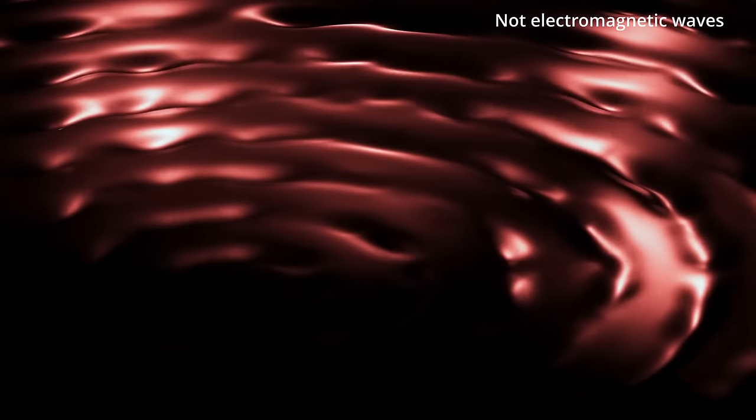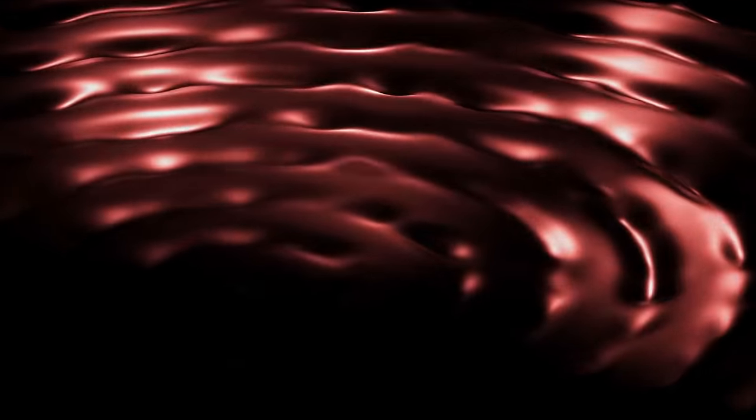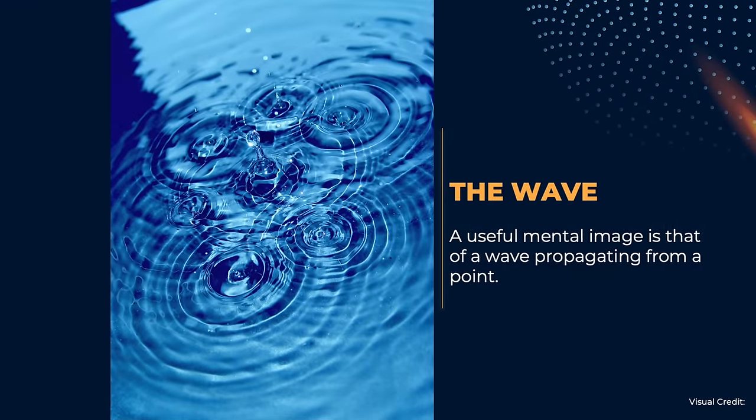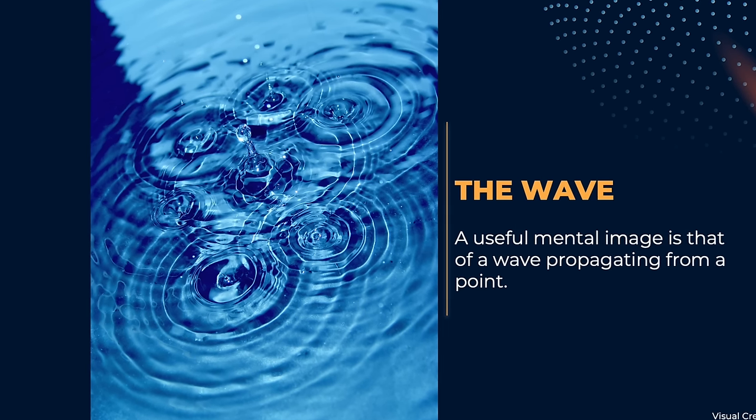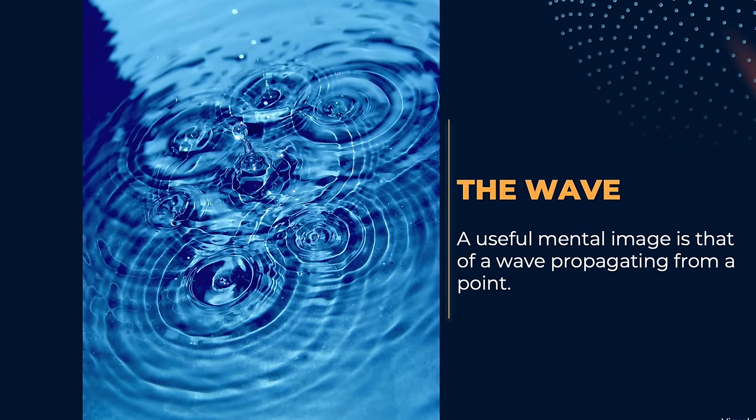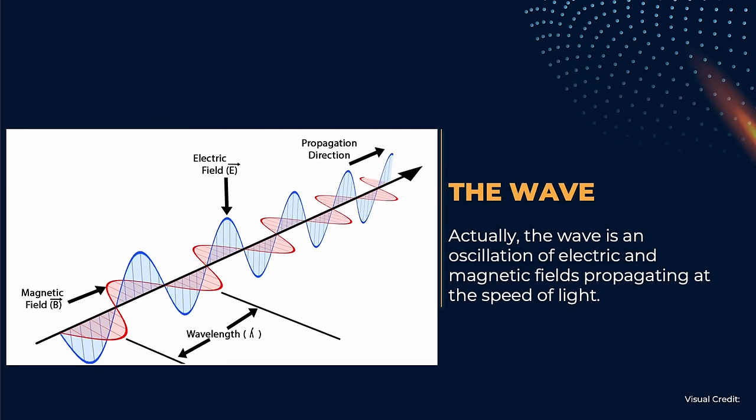Defining exactly what an electromagnetic wave is is a job that is more suited to the physics lessons in high school or college. The mental image I think it is useful to have is that of a wave propagation as a spherical or directional perturbation moving out of the emitter at the speed of light. If you zoom in into the wave, you see that the perturbation is actually the oscillation of electric and magnetic fields according to a sinusoidal pattern.